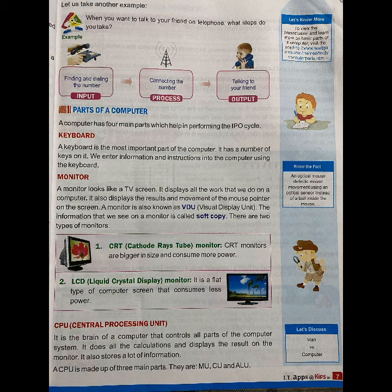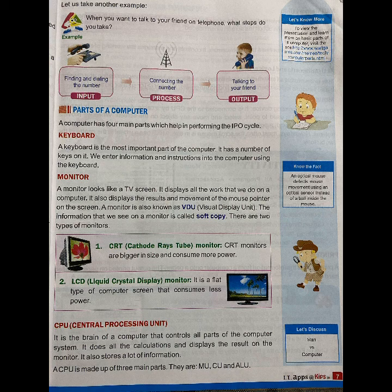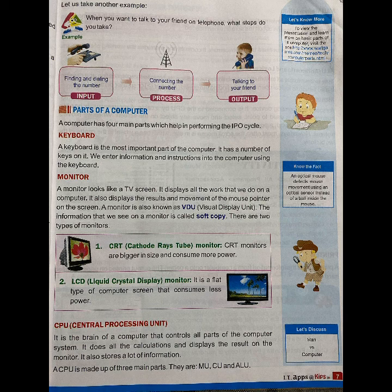A monitor looks like a TV screen. It displays all the work that we do on a computer and also displays the results and movement of the mouse pointer on the screen. A monitor is also known as VDU — Visual Display Unit. The information we see on a monitor is called soft copy. There are two types of monitors: CRT and LCD. CRT stands for Cathode Ray Tube monitor — CRT monitors are bigger in size and consume more power.